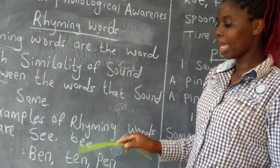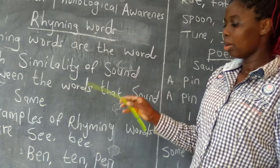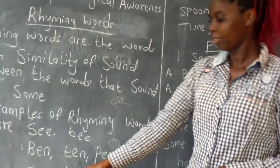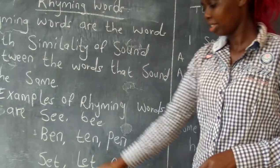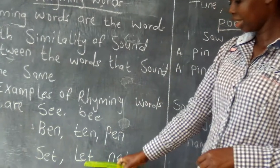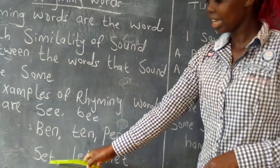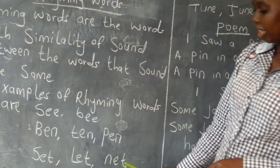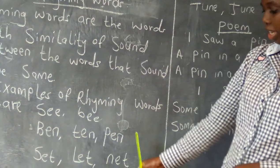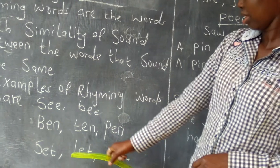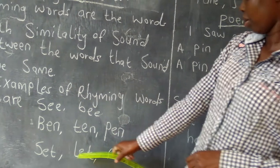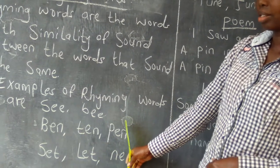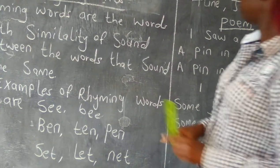We have 'set', 'let', 'net'. We have E in between these sounds. So the E makes those words rhyme.